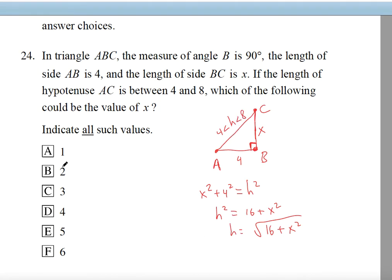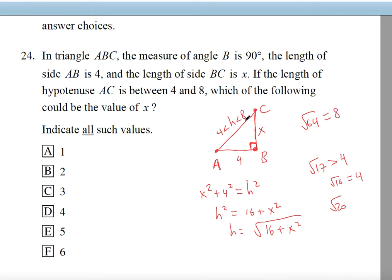We need to check each possible X value. Plugging in X=1 gives radical 17, which is greater than 4 since radical 16 is 4, so the constraint is satisfied. X=2 gives radical 20, still greater than 4. The upper limit is 8, meaning radical 64. So we need to be below radical 64 and above radical 16. We also note that radical 64 equals 64, and radical 16 equals 16 in their square form.